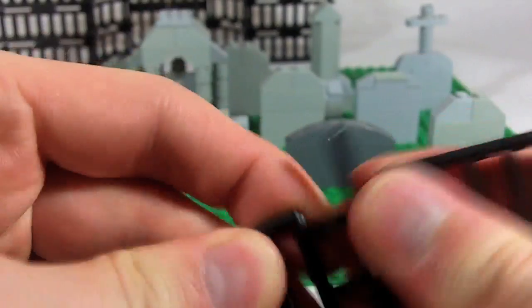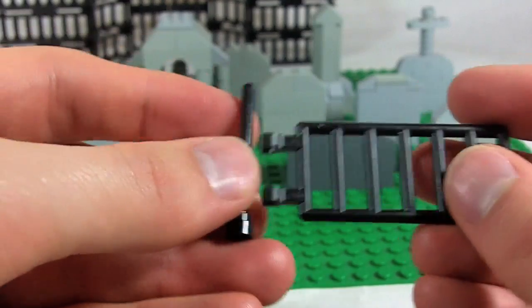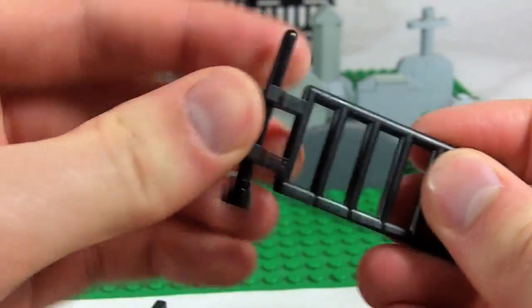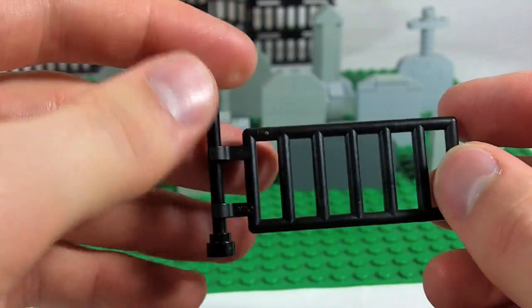Another thing you can do is if you've got ladder pieces, you can do them in brown. I happen to have a few in black. Connect those to a post like that, and then you've got a sort of fence like that.